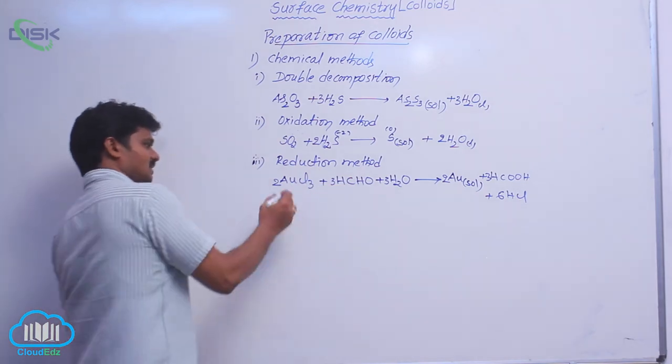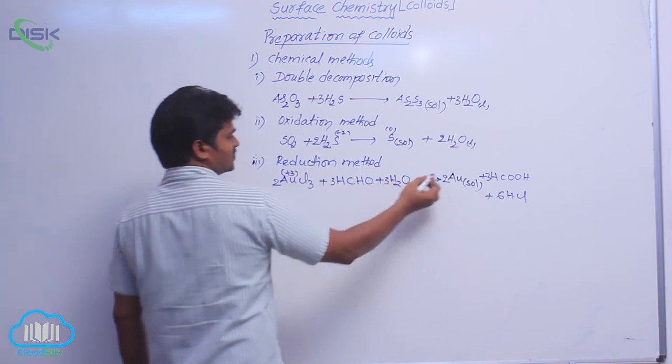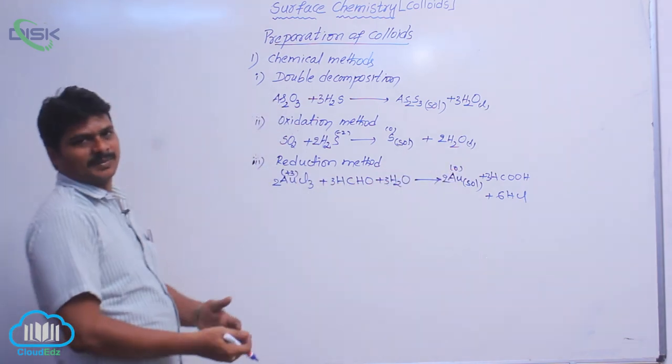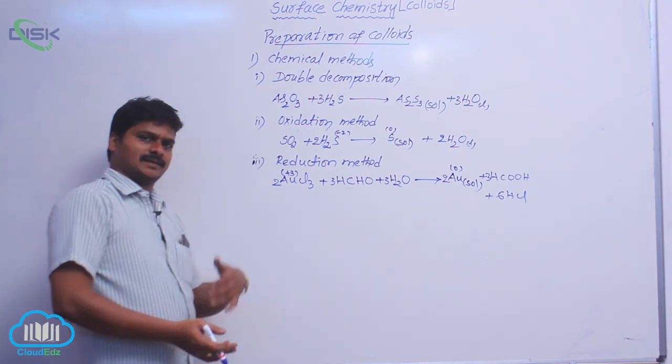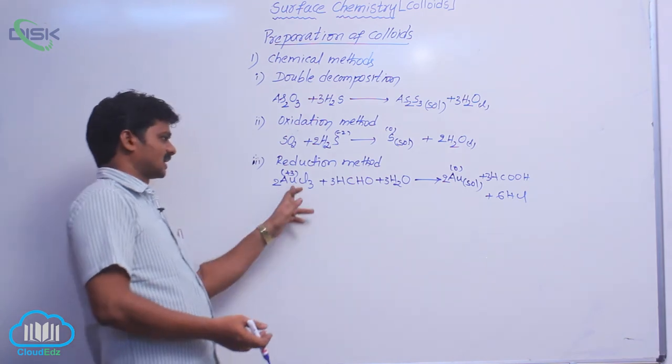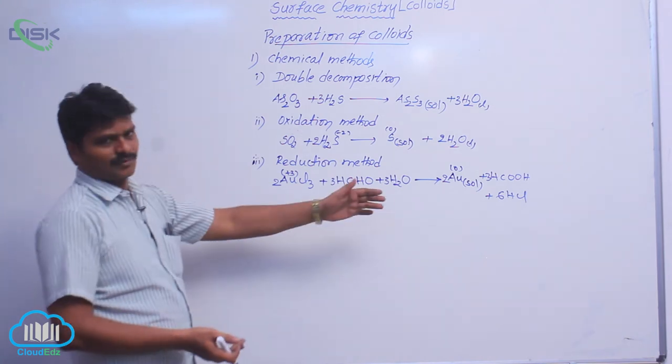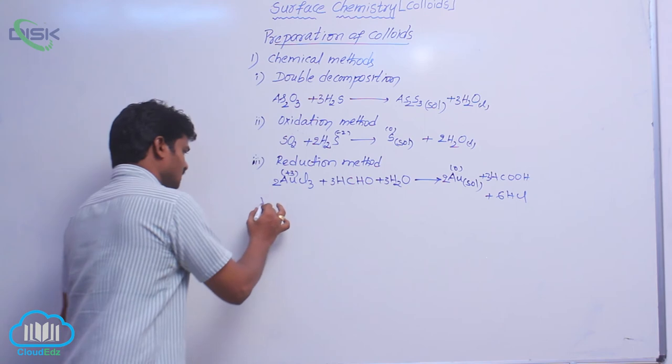Here see the change in oxidation state: plus 3 of gold is changed to 0. That means gold sol is prepared by reduction reaction. Plus 3 to 0 means reduction. In that way, reduction method is used for the preparation of gold sol.